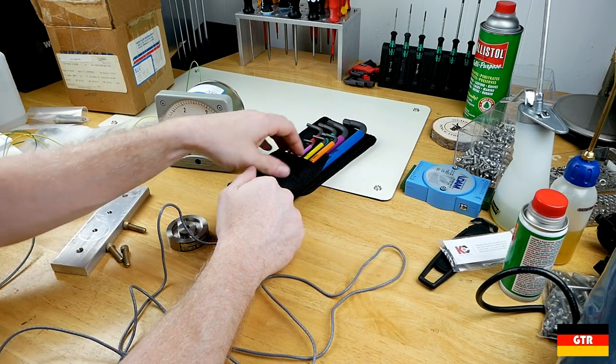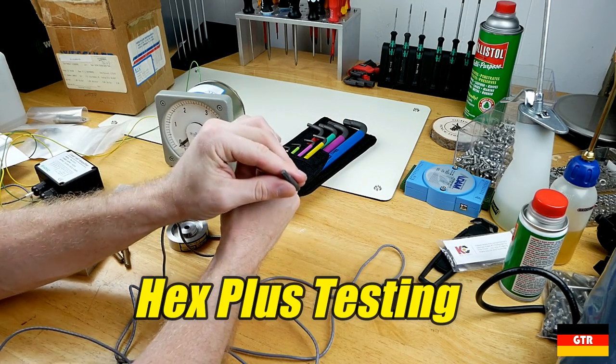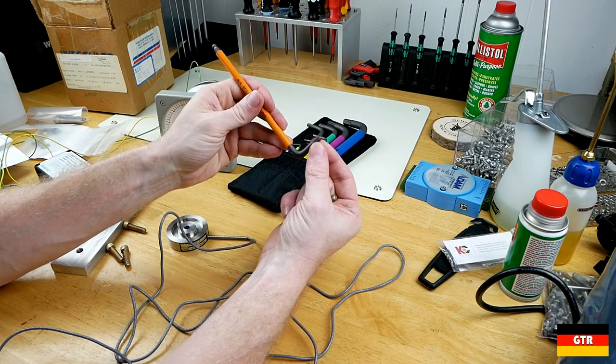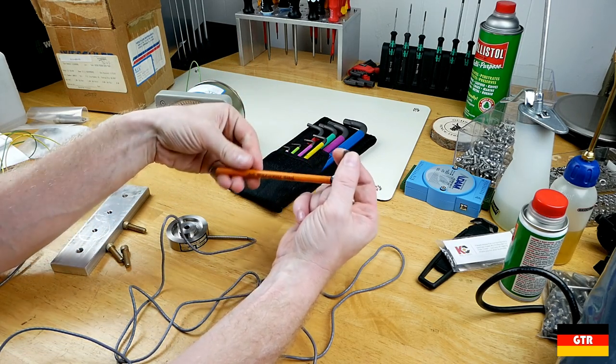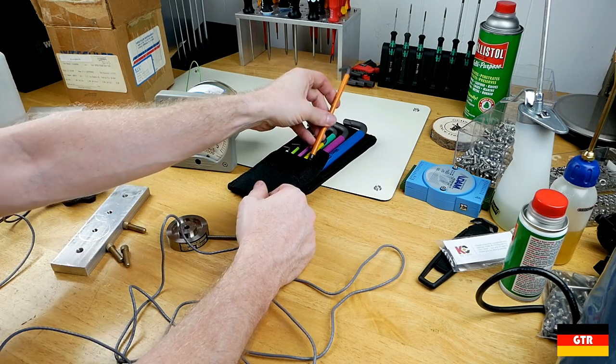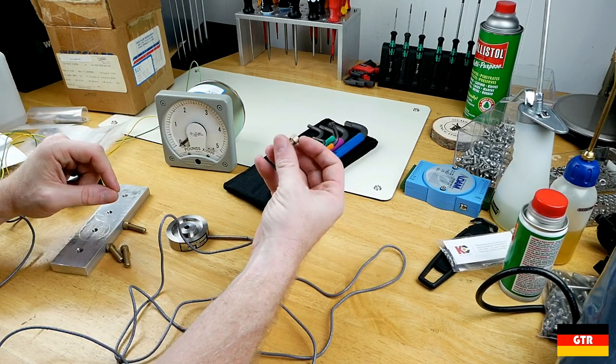Somebody asked me the other day if I've ever actually tested the Hex Plus system from Wera that's supposed to make it less likely to strip or damage a fastener. It got me thinking, I think I might have enough test equipment to actually do that. So I scrounged together some things to actually test that theory.